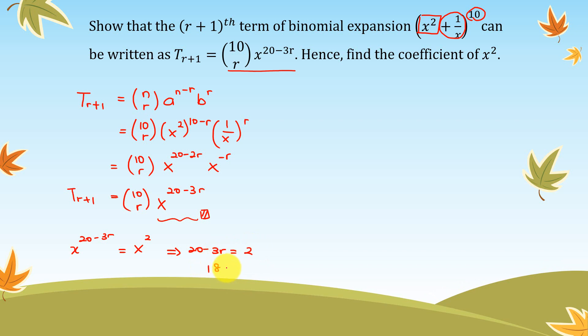So bring the 2 to the left-hand side, so 18 equals 3r. So r must be equal to 6. Once I know the value of r, okay, so substitute r equals to 6.